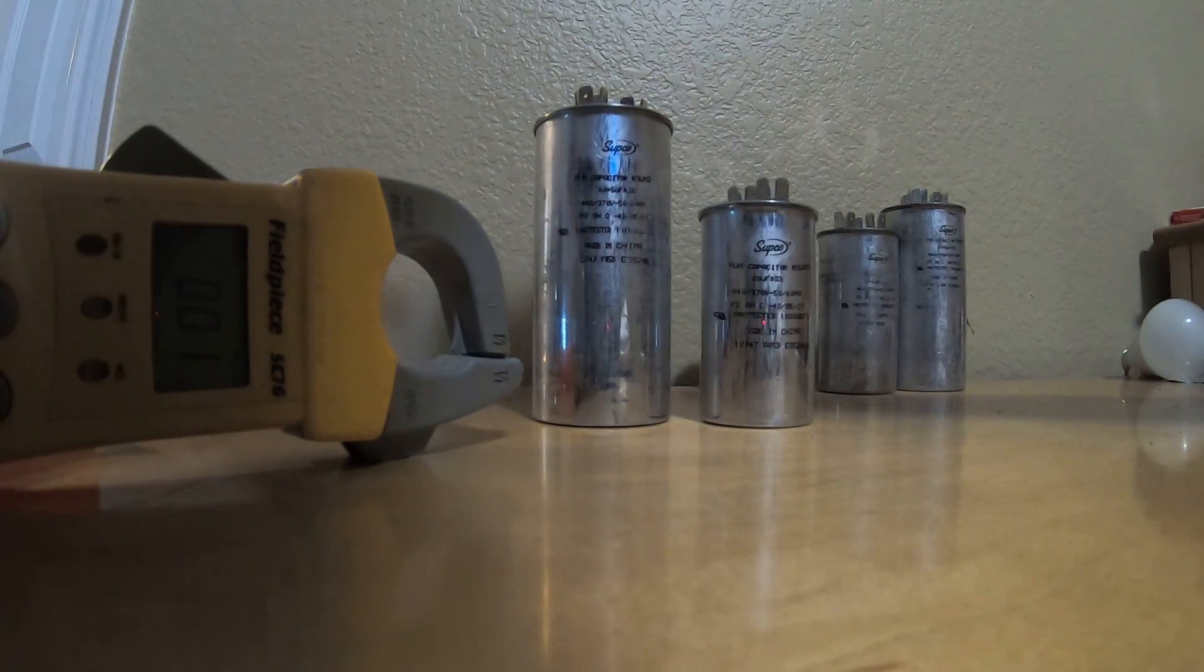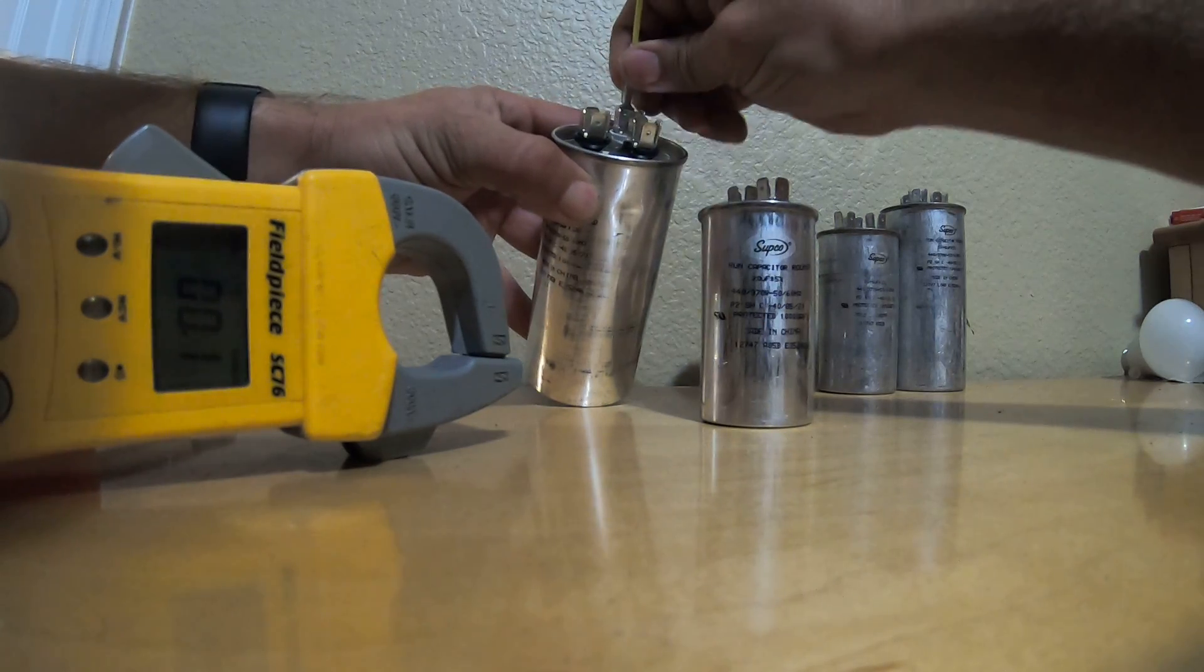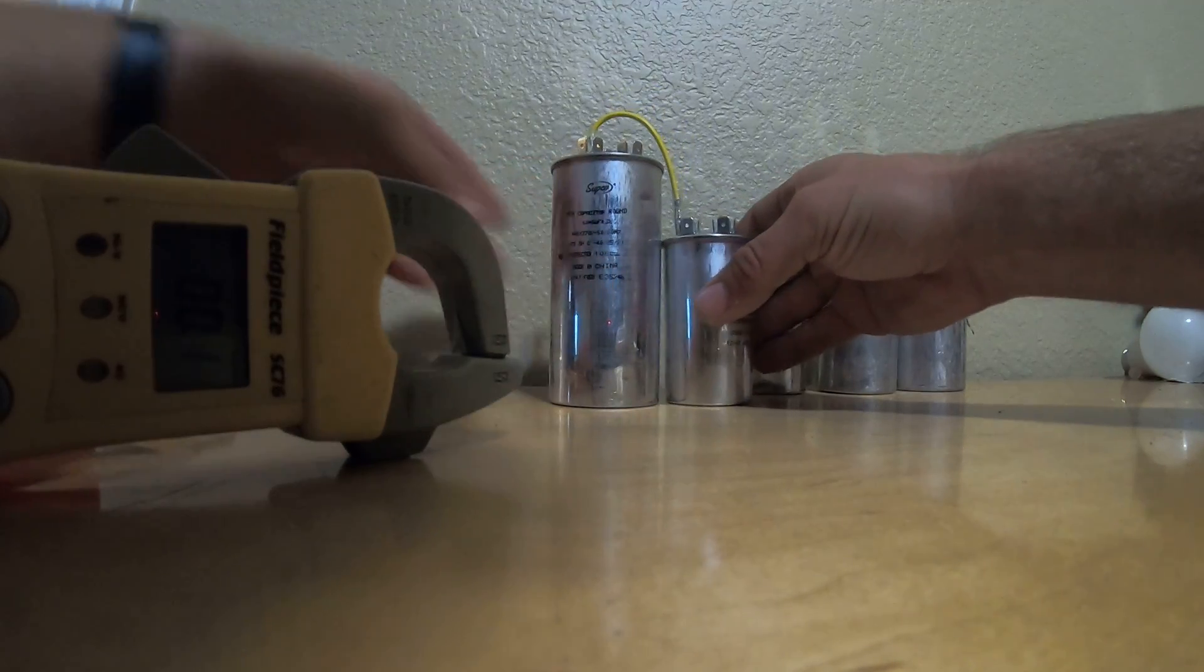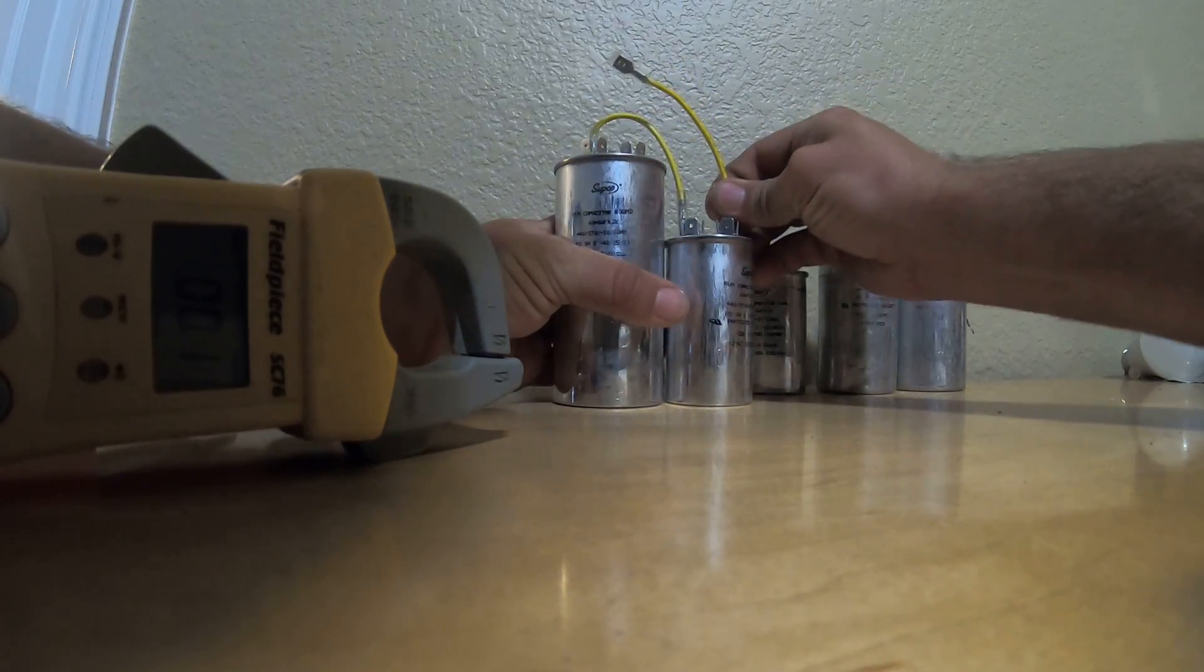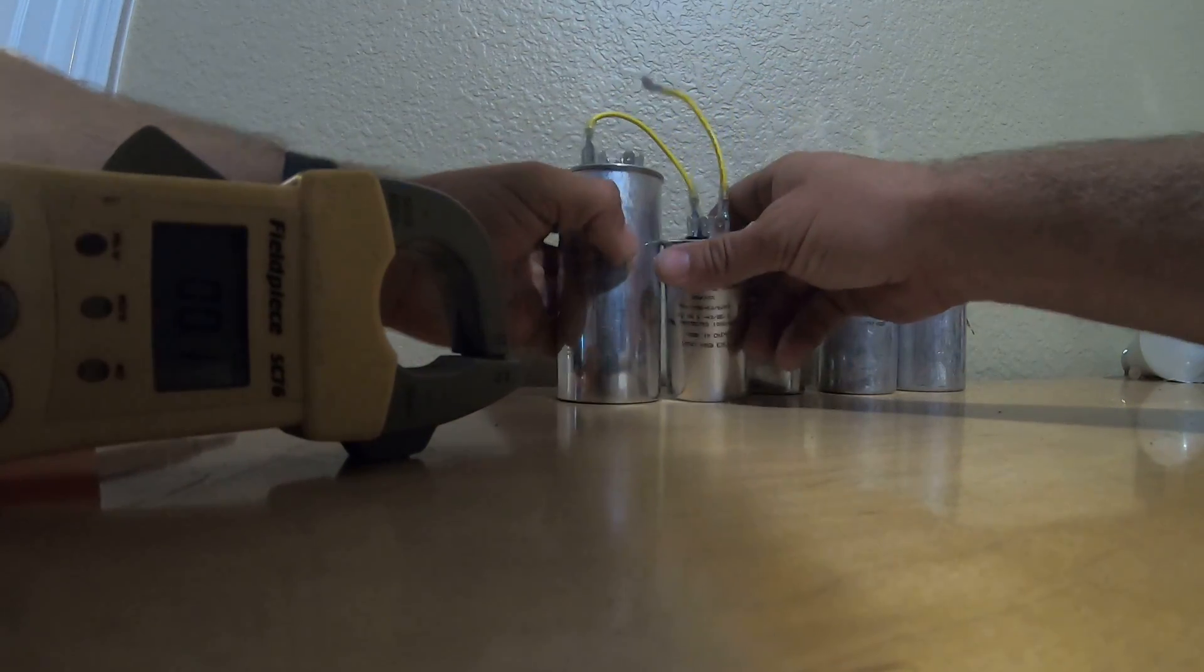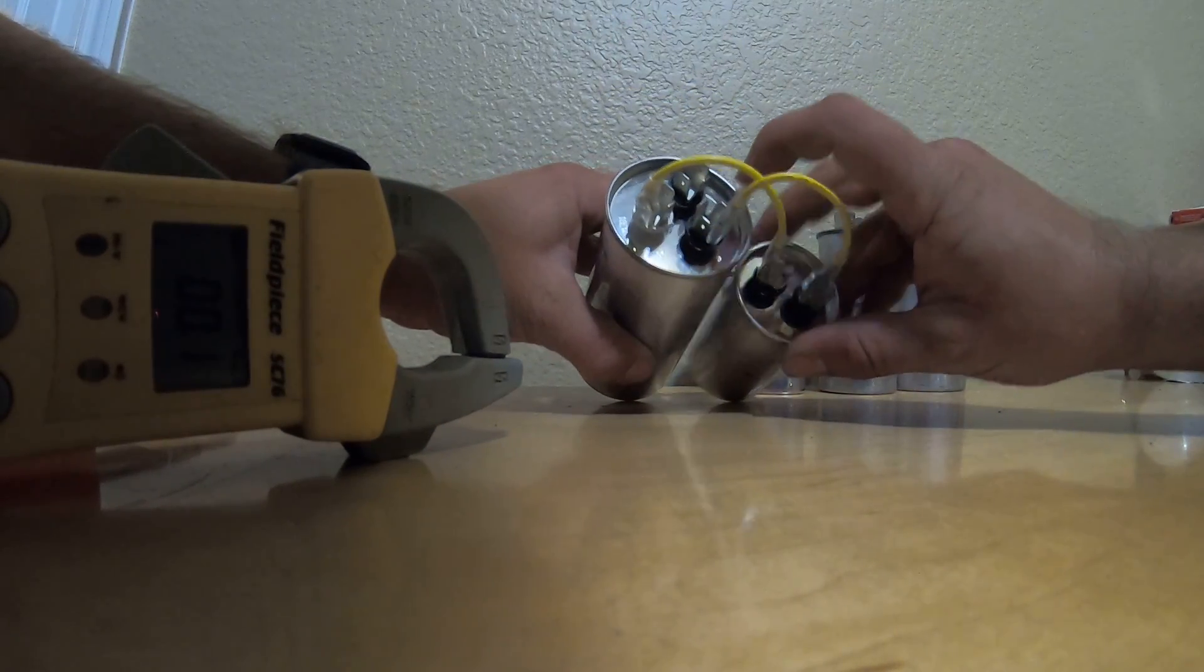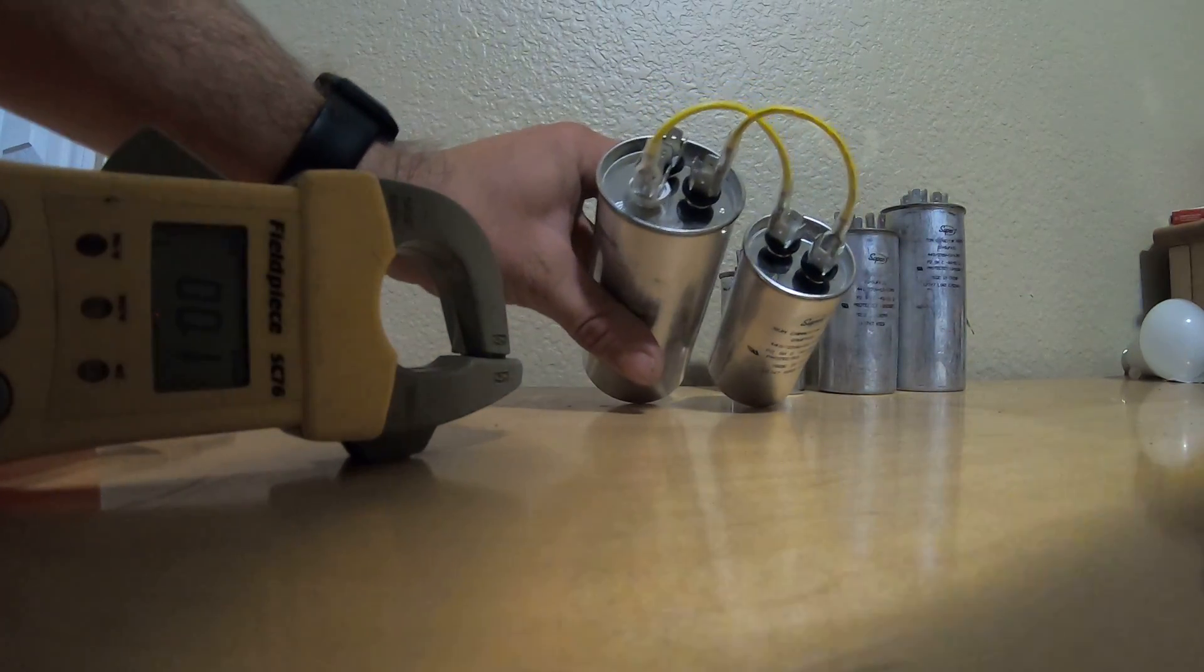So I have a 60 and I also have a 20 microfarad. If I needed an 80 for some reason and this is all I had, what I would do is I would take this and jump it from the Herm side right here over to one side of the 20 microfarad capacitor, like that. Then you take the other side of the split capacitor and you take it to the common terminal. Move it over here a little closer.